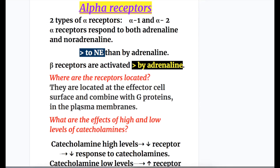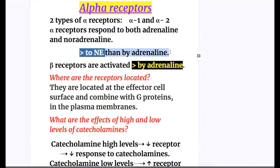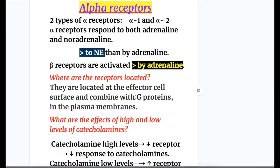There are many types of alpha receptors, but two types are important: alpha-1 and alpha-2. Alpha receptors respond to both adrenaline and noradrenaline, and respond more to noradrenaline than adrenaline, whereas beta receptors are activated more by adrenaline. The receptors are located on the effector cell surface and combined with G proteins in the plasma membrane.